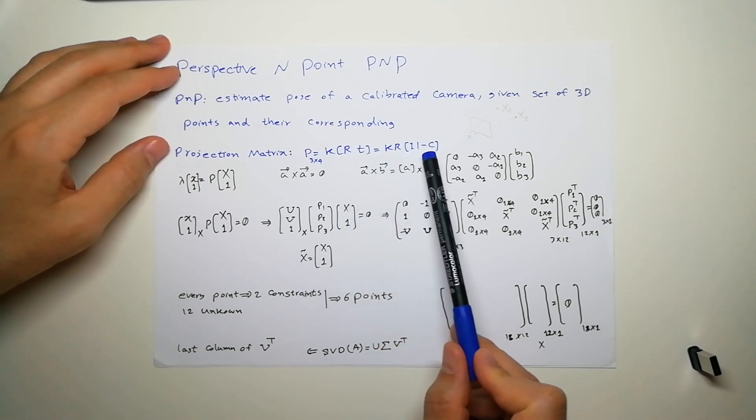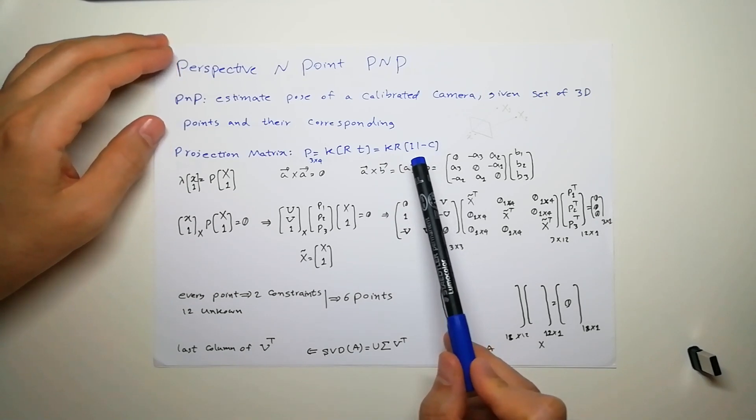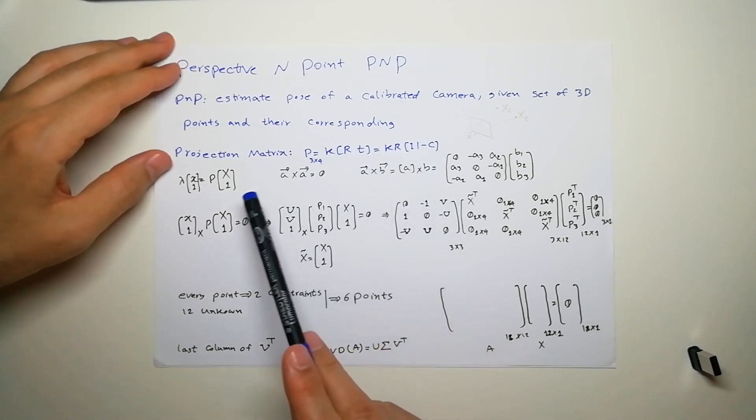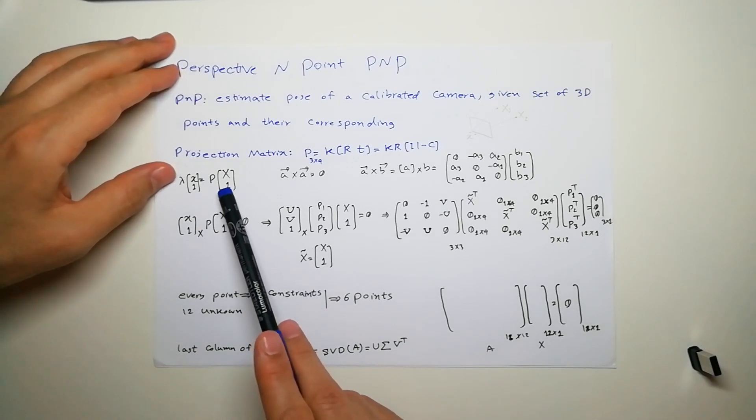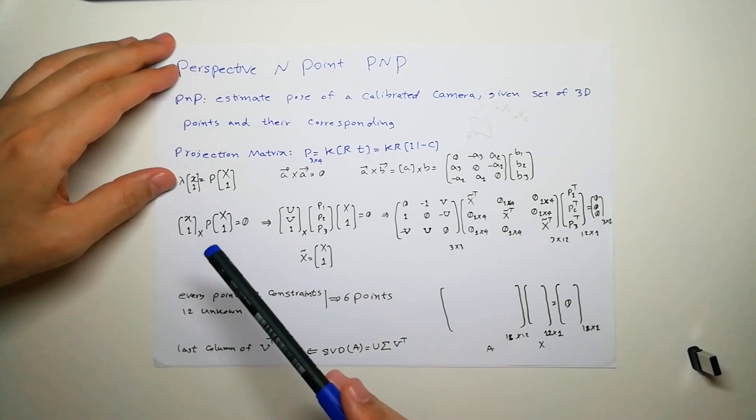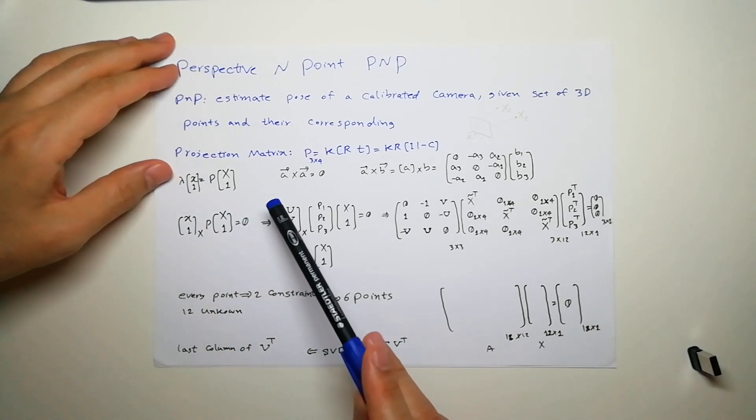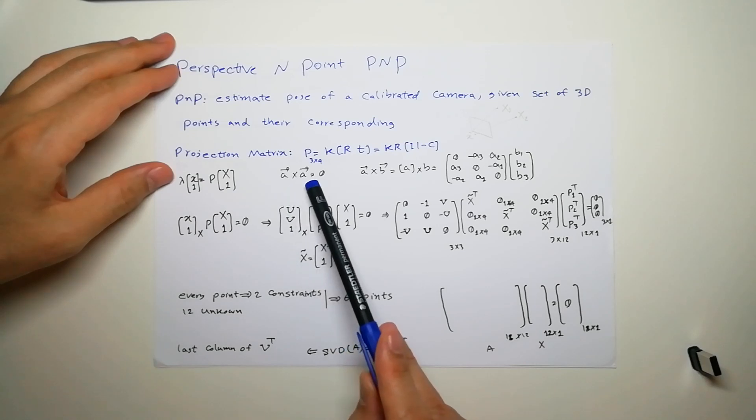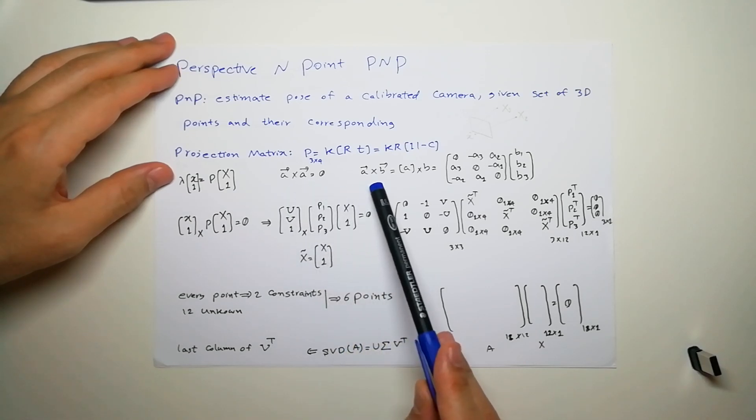This is our projection matrix. We know that if we have a point in 3D and multiply by projection matrix, we get the point in camera plane. Because it's homogeneous we put a lambda here, or we could just divide by the last element. We also know that cross product of every vector by itself is zero.